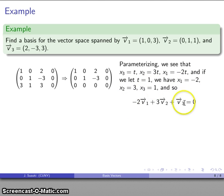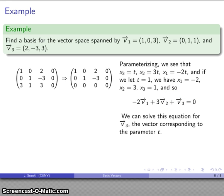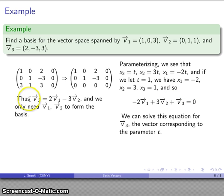That gives me this as an equation in my three vectors. I can solve this for v1, v2, or v3. It's easiest to solve for v3. So I get the vector v3 expressed in terms of v1 and v2 only, which says that v3 is superfluous. I don't need it, and I only need v1 and v2. So my basis is this vector and this vector only.